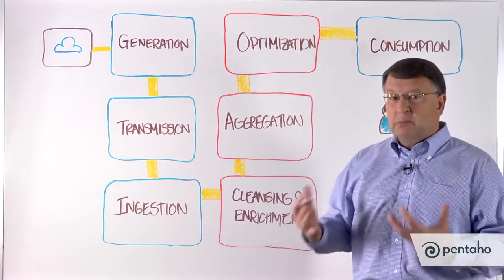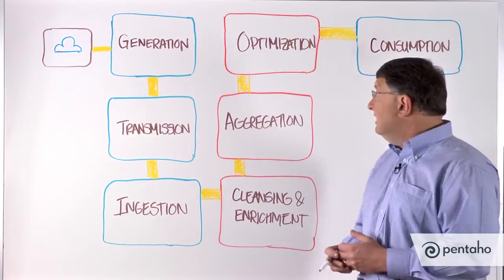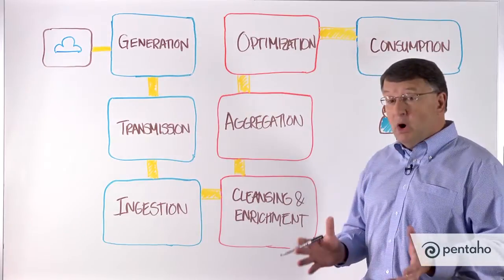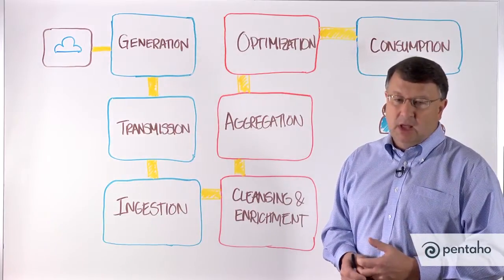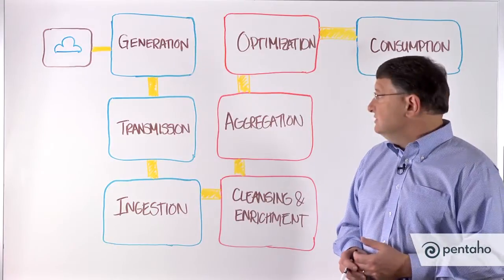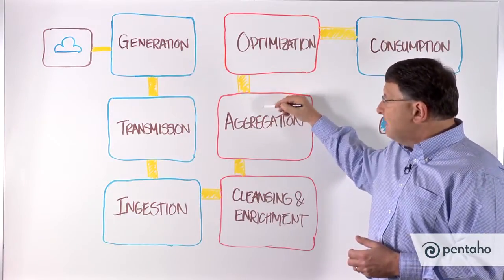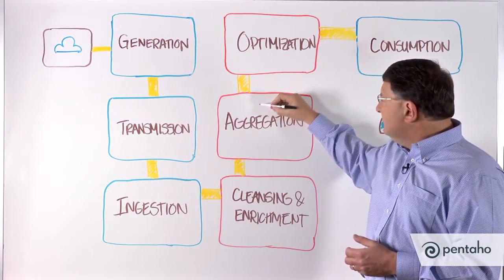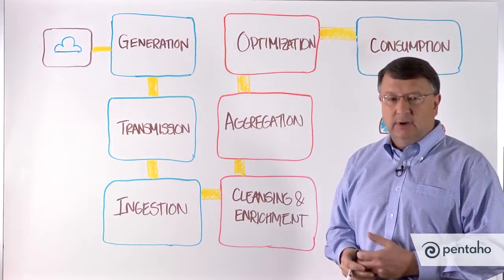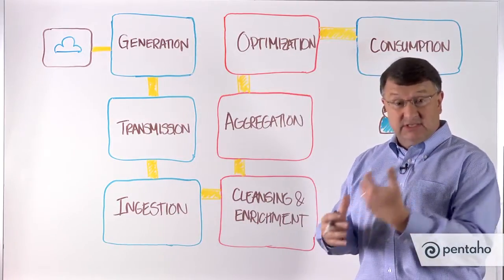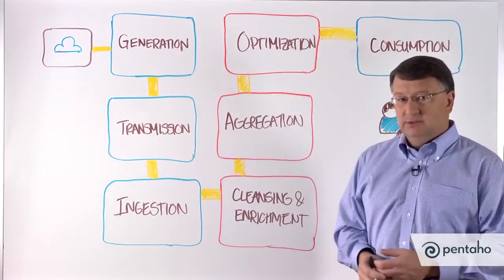Pentaho supports a number of popular analytical databases on the market — things like Vertica, Greenplum, and Vectorwise, for example. Through high-performance bulk loaders, we're able to take this aggregated data and move it very quickly into a place where it can be accessed by the user.